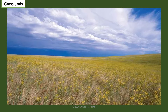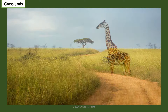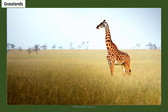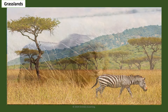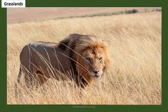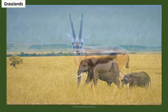Grasslands are regions dominated by grasses with few trees and shrubs. Grasslands provide shelter to a variety of animals including giraffe, zebra, lion, elephant, and gazelle.